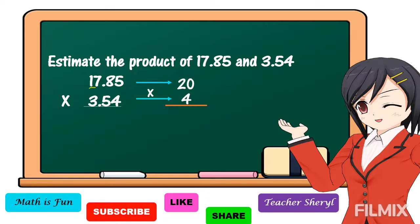Then we're going to get the product: 20 times 4, the answer is equal to 80. Therefore, the estimated product of 17 and 85 hundredths and 3 and 54 hundredths is 80.